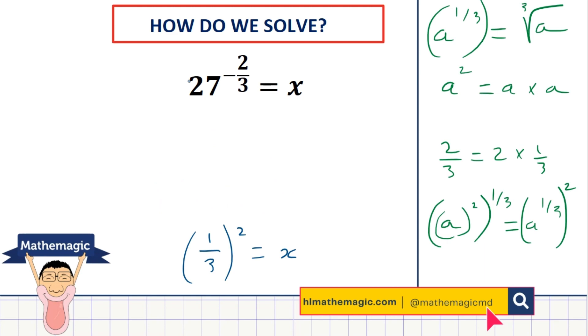And squaring 1 over 3 is the same as doing 1 over 3 times 1 over 3. And when you do that, you multiply the tops and you multiply the bottoms. So you can say that x is equal to 1 over 9. And this is a wonderful answer for this question.